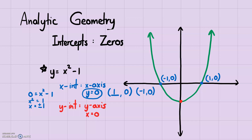You can similarly find the y-intercept by setting x = 0. That gives y = 0 - 1, so y = -1. Since x = 0, the point is (0, -1). That's our y-intercept. This is how you find the x and y-intercepts — by setting the other variable equal to 0.